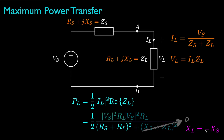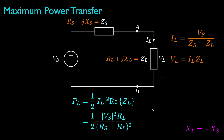If we set the load reactance to cancel the source reactance, we get an expression that only depends on load resistance. If we make the load resistance zero, the average power will be zero. If we make it very large, the power will also be zero. Somewhere in between there is a maximum, and by differentiating the average power with respect to load resistance and setting that derivative equal to zero, we can show that power is maximized when the load resistance equals the source resistance.